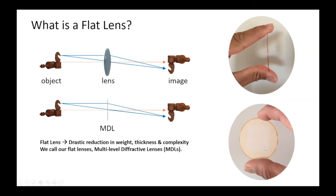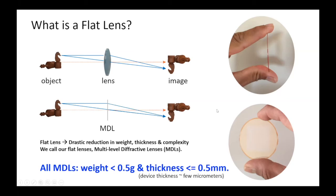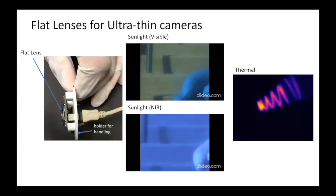Over here you can see that we are holding one of the lenses — the lens is made on this glass substrate, so thin you cannot see it in the cross-sectional profile. Most of these have very, very low weight and thickness down to a few microns. That's one of the advantages that these kinds of lenses offer.